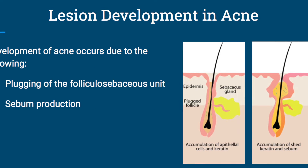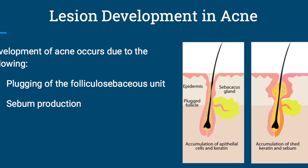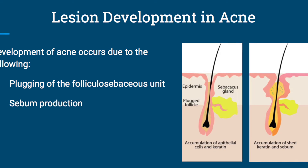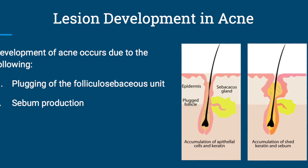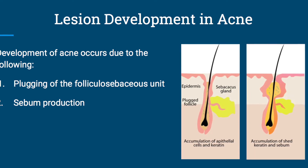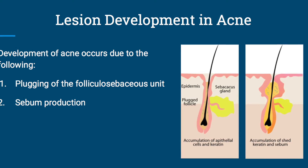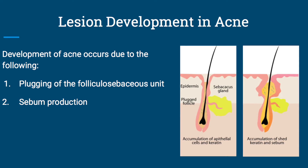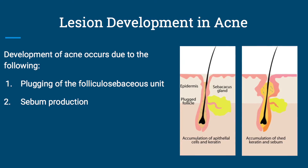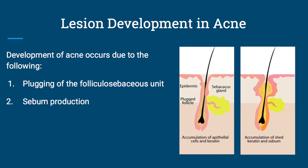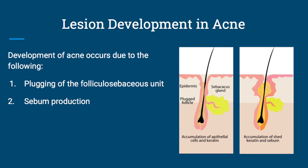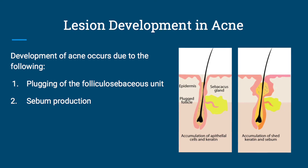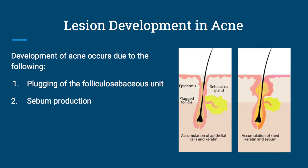Now we're going to shift to the topic of acne. Acne development occurs due to the following: first, the plugging of the folliculosebaceous unit, due to excess adhesion of keratinocytes and failure of the sloughing process. Another reason acne develops is sebum production — the oily secretion from the sebaceous gland that is increased due to androgens. Without sebum production, clogged follicles would fail to become more than comedones, which would not lead to acne.